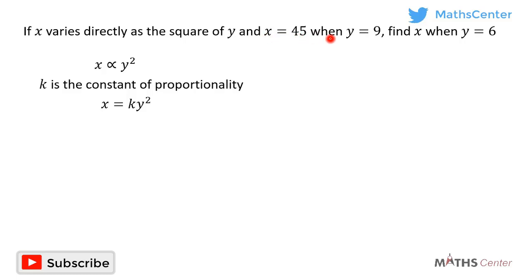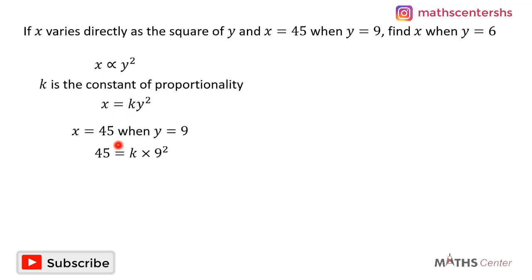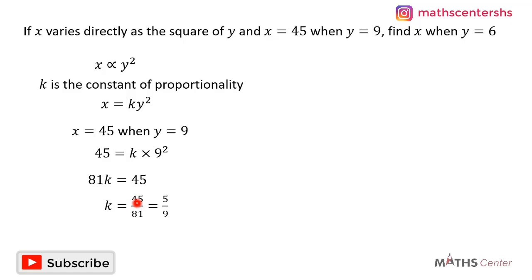The question tells us that x is equal to 45 when y is equal to 9. We can use this information to find the value of k. Substituting into the equation, we have 45 is equal to k times 9 squared. 9 squared gives us 81, so 45 is equal to 81k. Dividing both sides by 81 gives k equal to 45 divided by 81, which is 5 divided by 9.